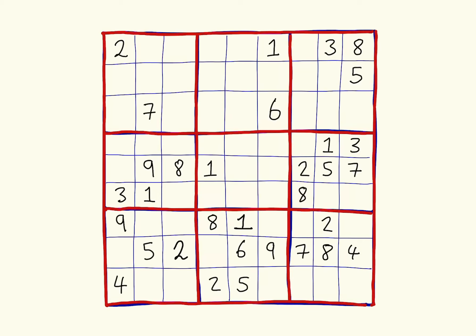Then we have a number one and a number three. We can't place the number one in one cell because we've already got a one in that three by three box, so we're forced to place the one in the only remaining position. And then by elimination, the three has to go in the last cell. By following the basic rules of the game, we've managed to fill in this row completely.